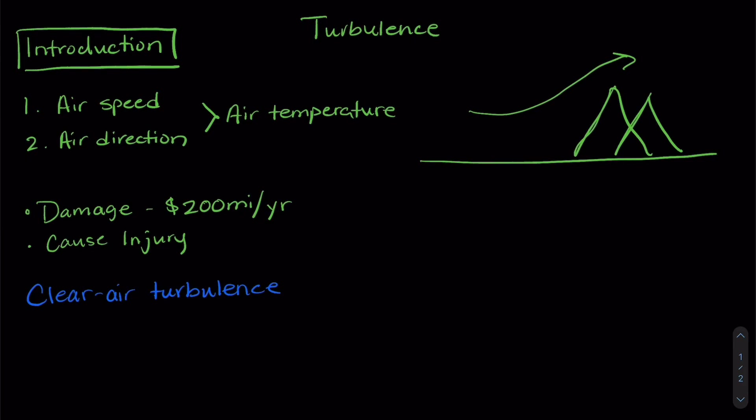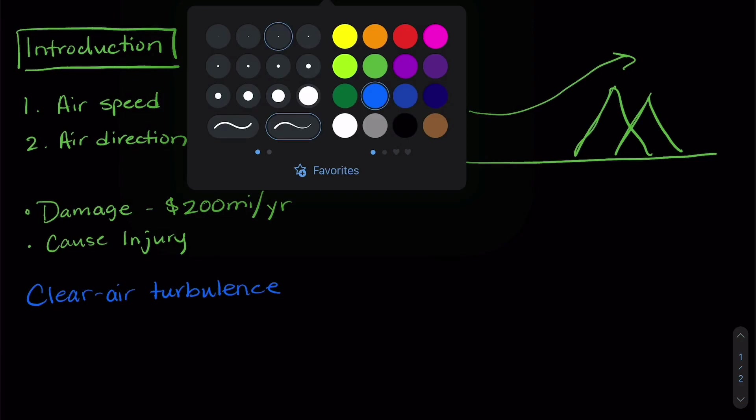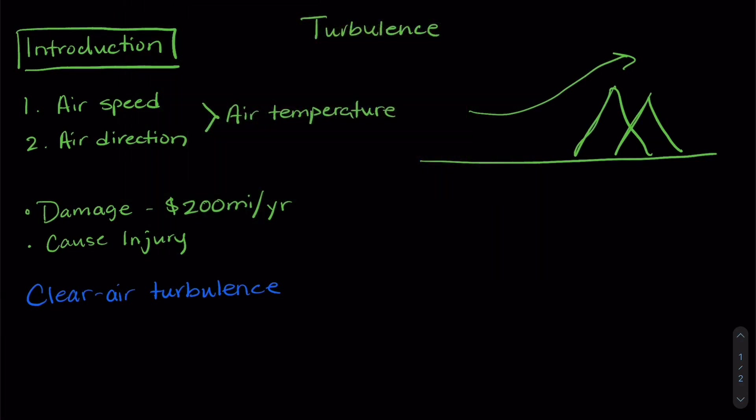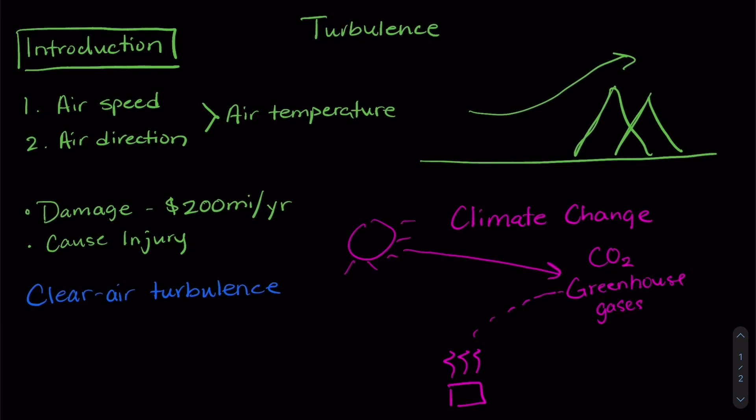Now one of the things that can cause changes in turbulence is changes in weather or weather patterns over a long term. And one of the things that scientists are interested in is how things like climate change can affect turbulence. Now just a quick review of climate change. It is caused by the burning of fossil fuels that release greenhouse gases into the atmosphere. So things like carbon dioxide and when the sun shines and goes through the atmosphere all of that heat energy is transferred to these greenhouse gas molecules and that causes an increase in temperature.